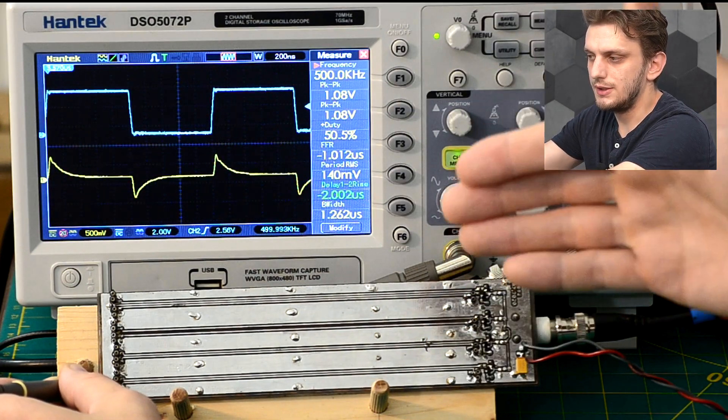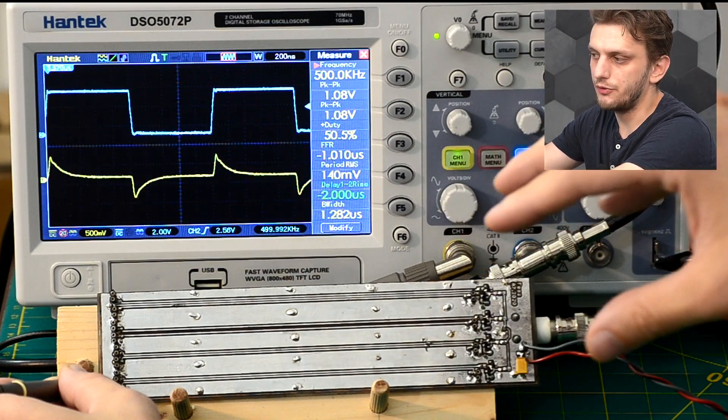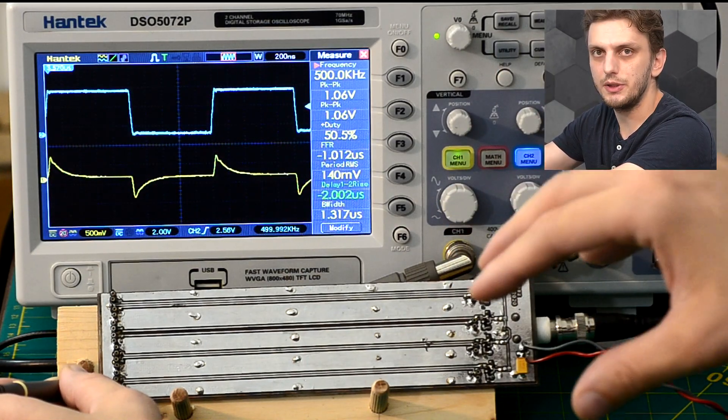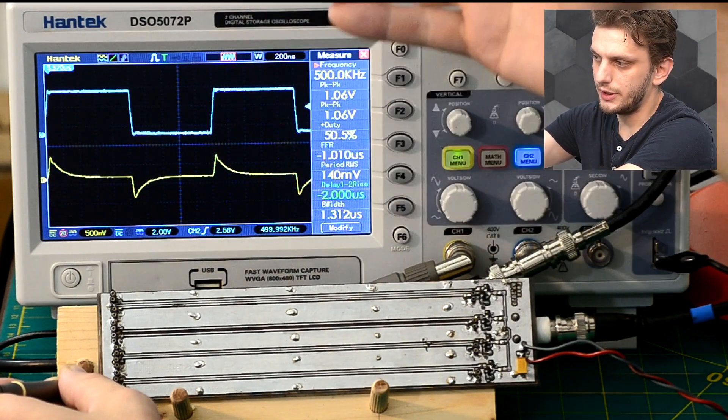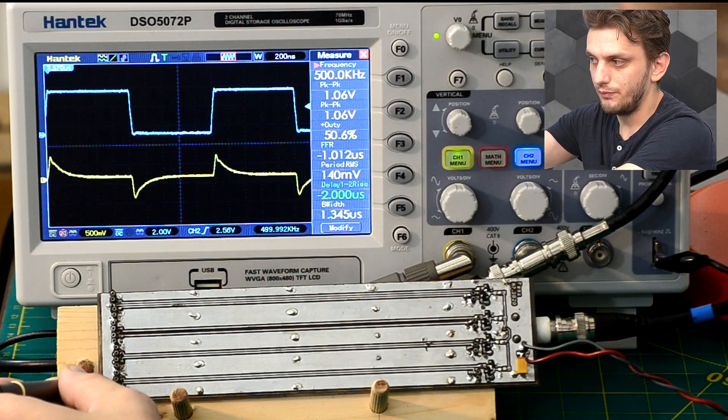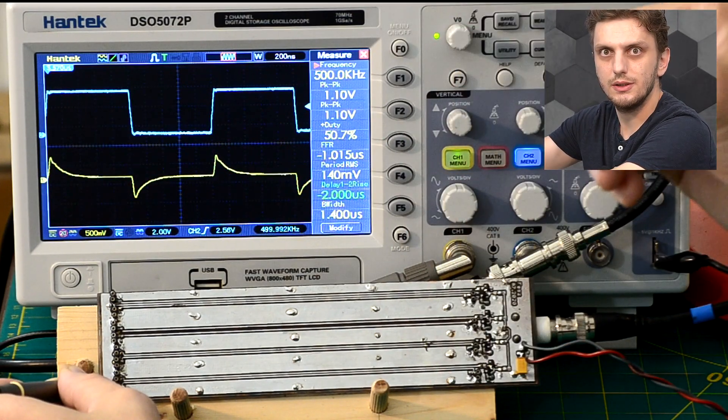And since this is a capacitive and magnetic coupling phenomenon, the higher the frequency, the better the coupling will be. Or in other words, the sharper our turn on and turn off happens in our aggressor signal, the more of the signal we will be seeing on our second trace.